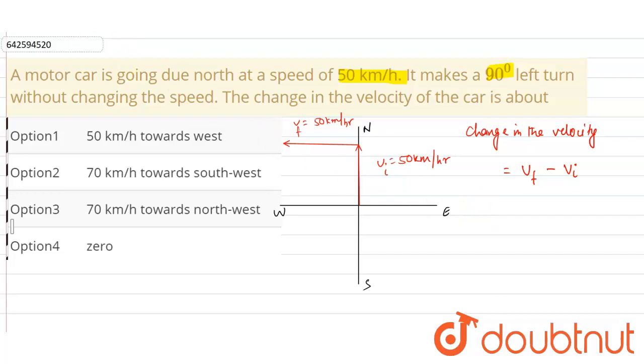So the vector Vi for us will be now look like this, correct, so in the opposite, in the reverse direction. So where the velocity will be the same, minus Vi. This vector represents the minus Vi with the magnitude of 50 kilometer per hour, correct.